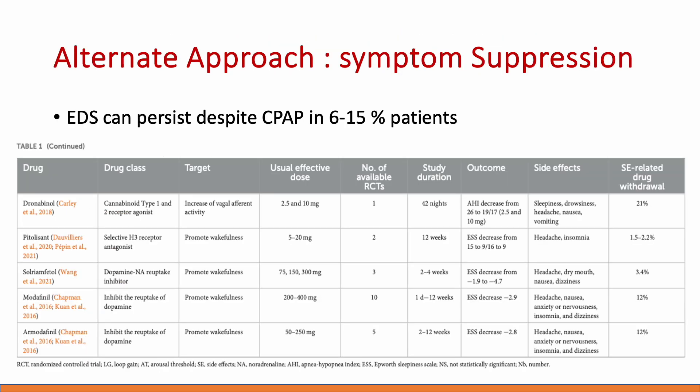The alternative approach is: if we cannot target the pathophysiological mechanism, let's suppress the symptom. One of the most bothersome symptoms is excessive daytime sleepiness, which can persist despite CPAP in 6 to 15 percent of patients. Even when patients are well-titrated and all nighttime events are covered, the patient may still not feel refreshed in the morning. When excessive daytime sleepiness persists, we can target it directly.